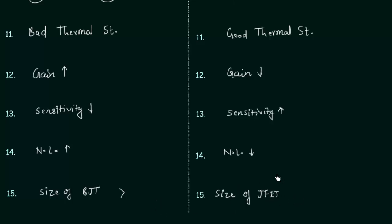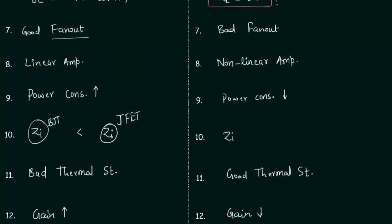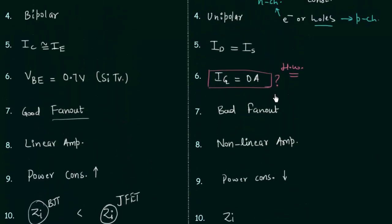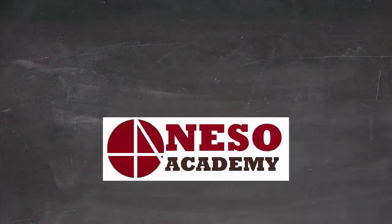Because of the smaller size, it is better to use JFET in integrated circuits — we use field effect transistors in integrated circuits instead of bipolar junction transistors. So this is all for this lecture. We discussed 15 points. If you have any doubt, you may ask in the comment section. There is one homework problem: you need to tell me why the gate current IG is equal to 0 amps. See you in the next one.